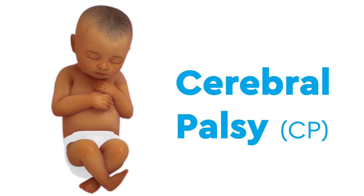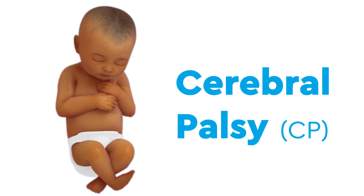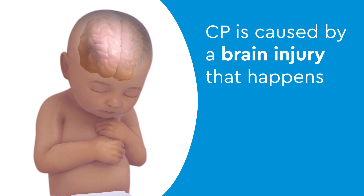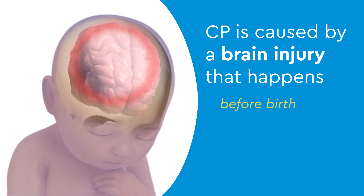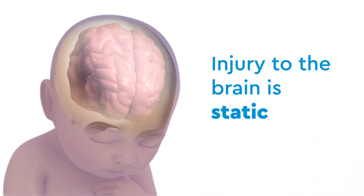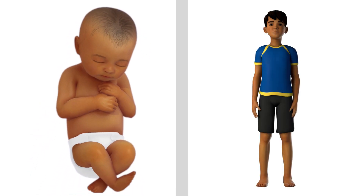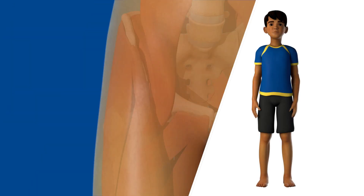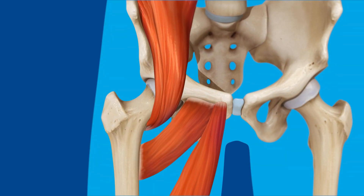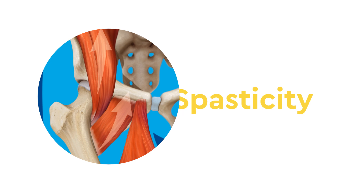Cerebral palsy is a permanent condition that results in some loss of muscle control and coordination. CP is caused by a brain injury that happens before birth or during the first one to two years of a child's life. While the injury to the brain is static and does not change, it can cause downstream changes as the child develops. For example, children with cerebral palsy often develop an involuntary tightness in their muscles, known as spasticity.